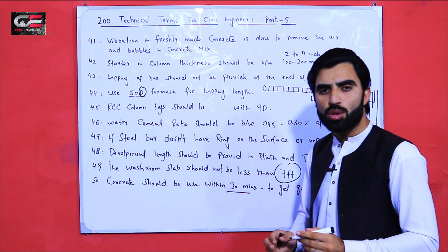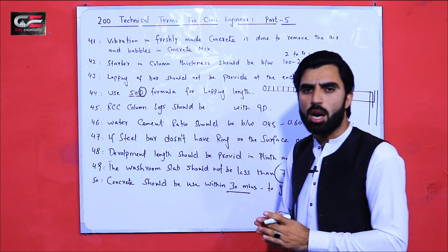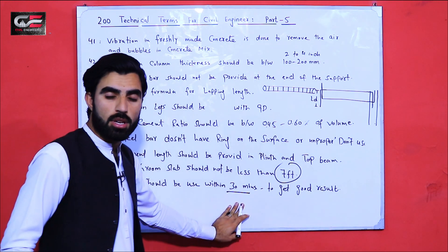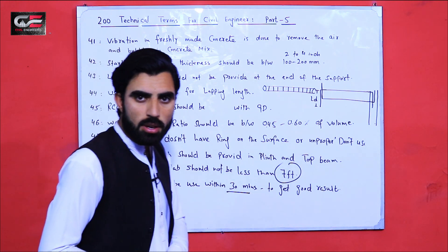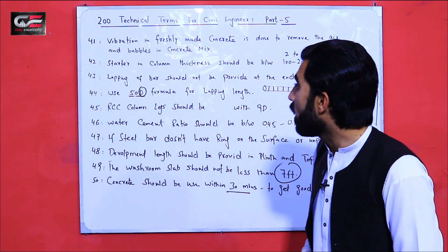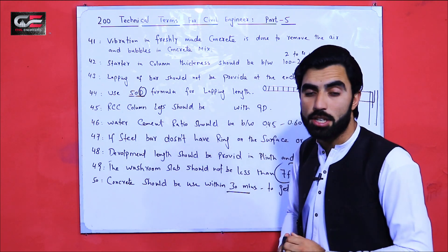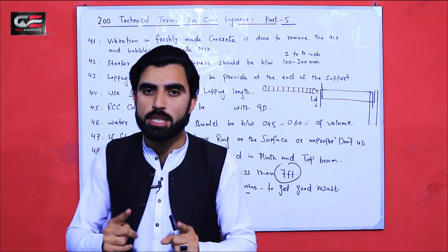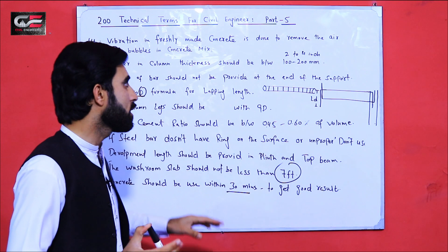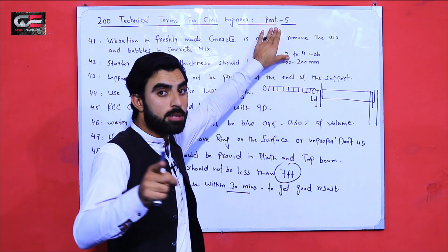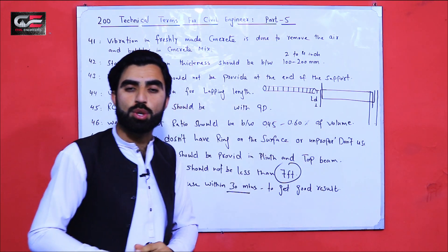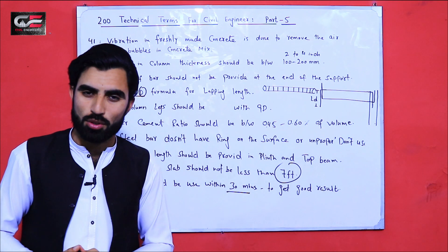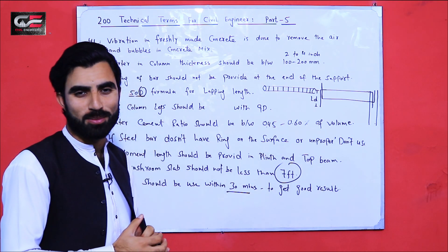Term number 50 is related to concrete: concrete should be used within 30 minutes to get a good result and to achieve good strength. If used within 30 minutes you will be satisfied with the concrete quality. These are the technical terms from 41 to 50. Wait for the next video — part 6 of the 200 technical terms series, which will cover terms 51 to 60. If you have any questions related to this topic, please comment and I will try to answer. Thanks for watching, see you in the next video, goodbye.